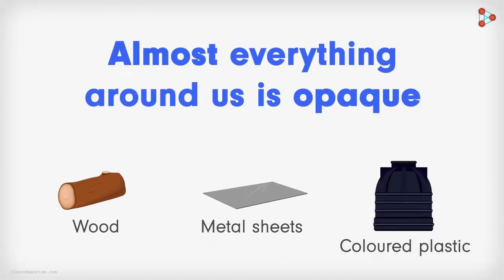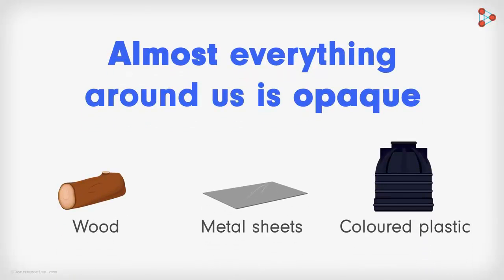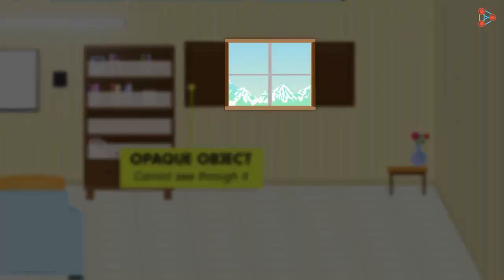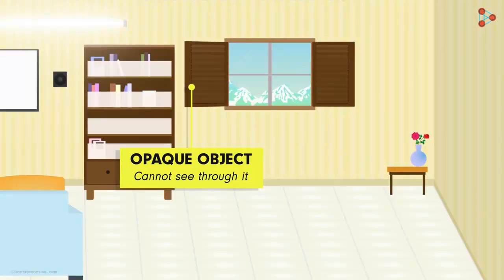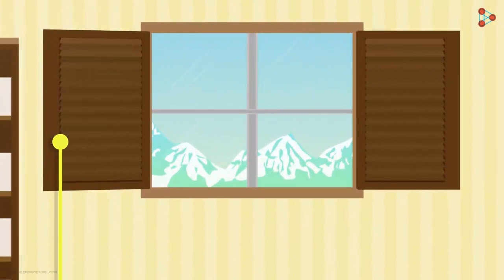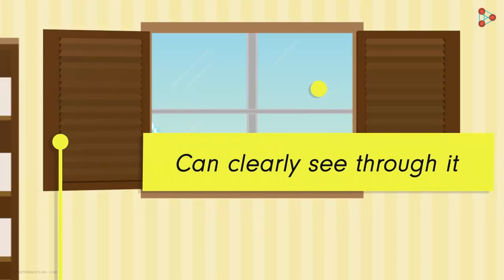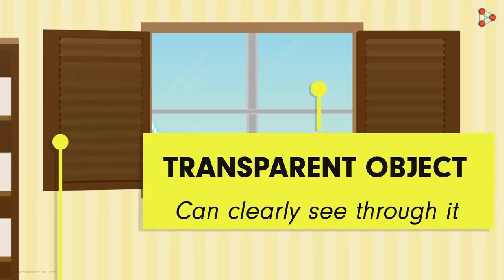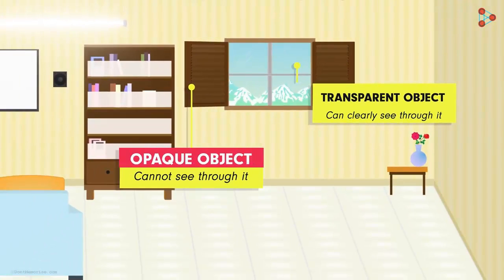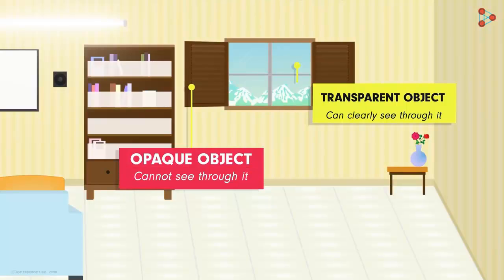Opaque objects are very large in number. Almost everything around us is opaque if you think about it. Wood, metal, sheets, colored plastic and so on. Now let's open the wooden shutters. Can you see something new? Yes, we see the surroundings through the glass. What has happened now is that we have a clear glass which allows light to pass through it, allowing us to see through it clearly. Such objects are called transparent objects.